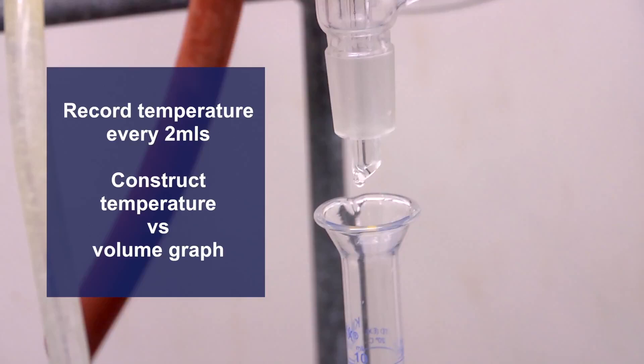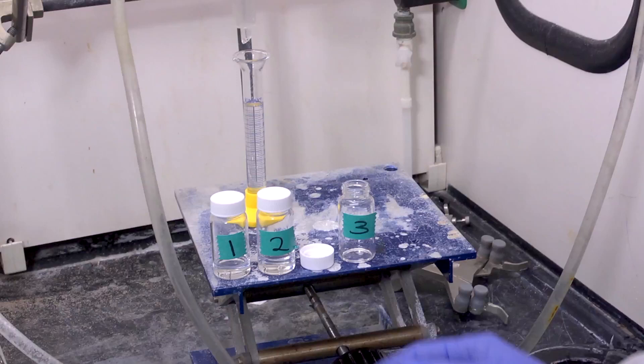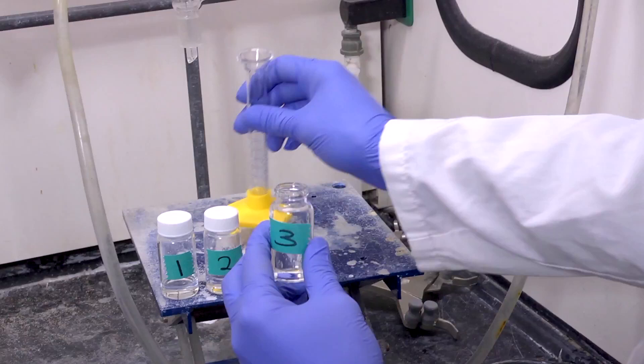With your recorded data, construct a temperature versus volume graph. The first 10 milliliters collected are fraction 1. Pour fraction 1 into a labeled vial and proceed to collect the next 10 milliliters for fraction 2. Pour fraction 2 into a labeled vial and collect the last 10 milliliters for fraction 3. You will collect three 10 milliliter fractions of distillate into three separate vials.